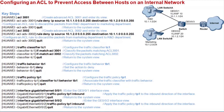Configure the traffic behavior TB1 to discard packets, then return to the system view. Configure the traffic policy TP1 in which the traffic classifier TC1 is associated with traffic behavior TB1, then return to the system view. Lastly, apply the traffic policy to the GE0/0/1 and GE0/0/2 inbound direction.